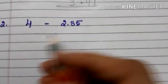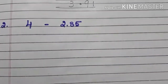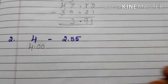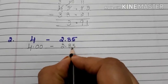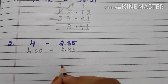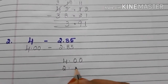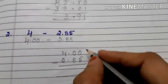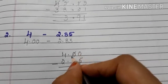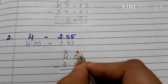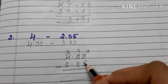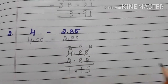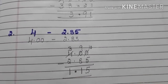Now another example: 4 minus 2.85. These are unlike decimals. Convert 4 to 4.00, minus 2.85. Now these two are like decimals. Arrange them: 4.00 minus 2.85. We cannot subtract 5 from 0, and the next digit is also 0, so we take borrow from the ones place. This becomes 3, this becomes 9, and this becomes 10. 10 minus 5 is 5. 9 minus 8 is 1. Decimal under decimal. 3 minus 2 is 1. So the answer is 1.15.